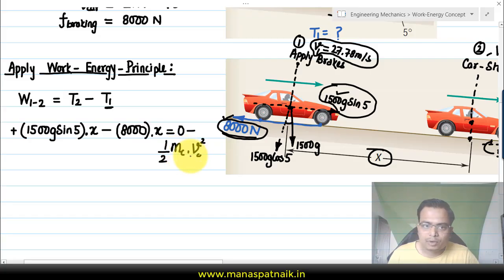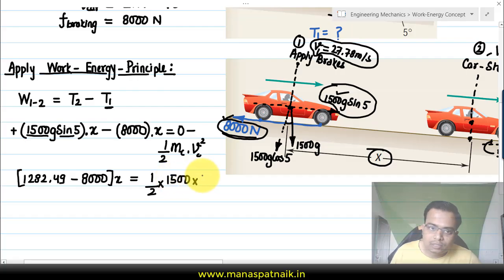The velocity is 27.78, so let's do this quickly. When you put this value into a calculator you're going to get 1282.49. So we have 1282.49 times x minus 8000 times x equals half of 1500 times 27.78 squared. You just have to solve this equation. The value of x finally works out as 86.18 meters.